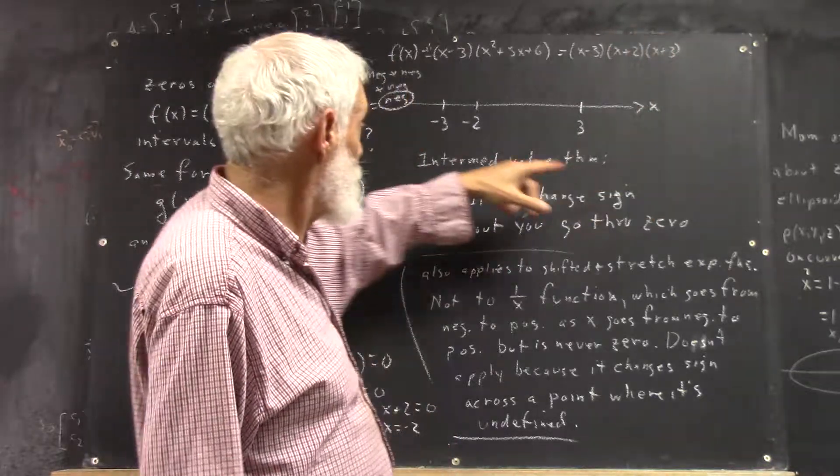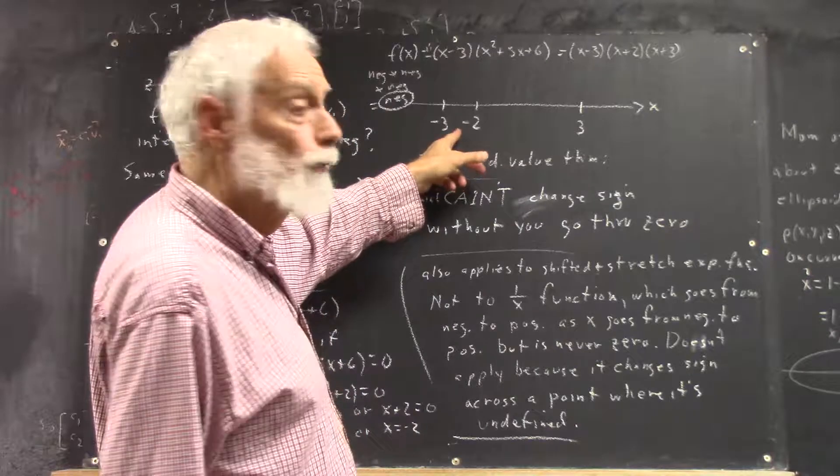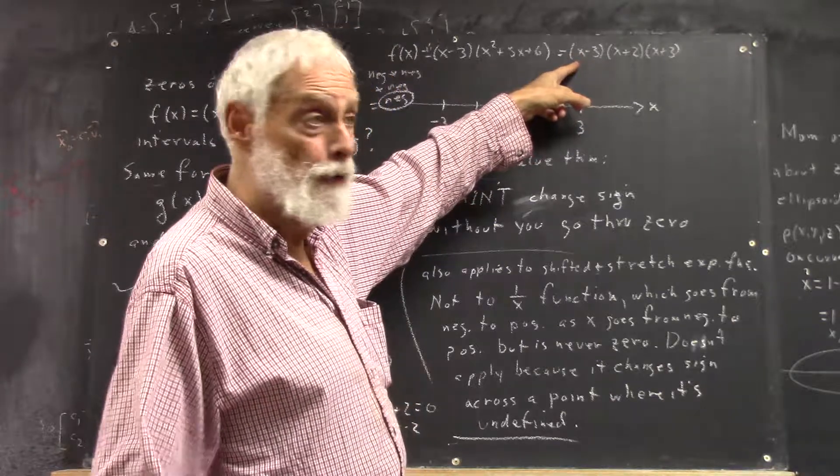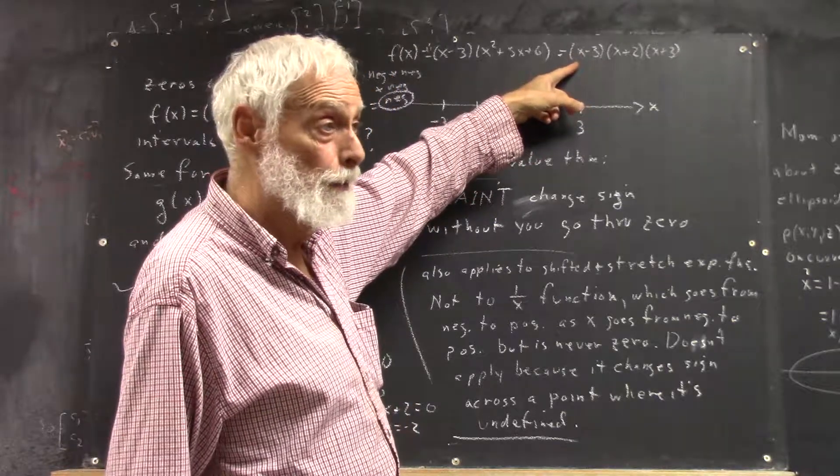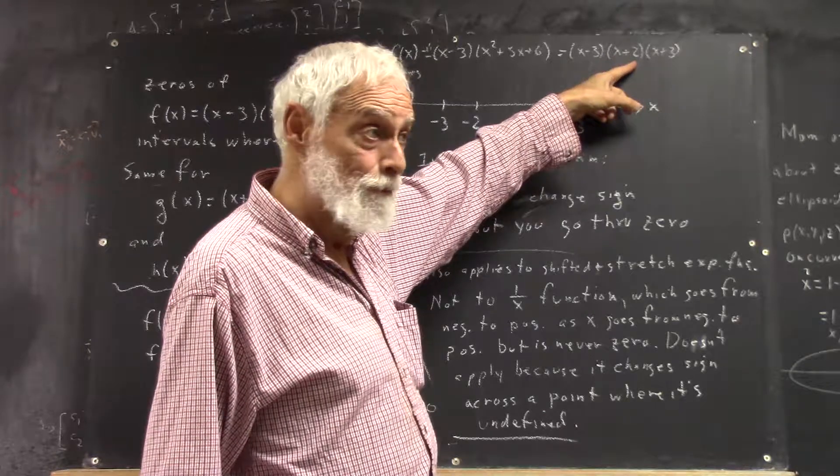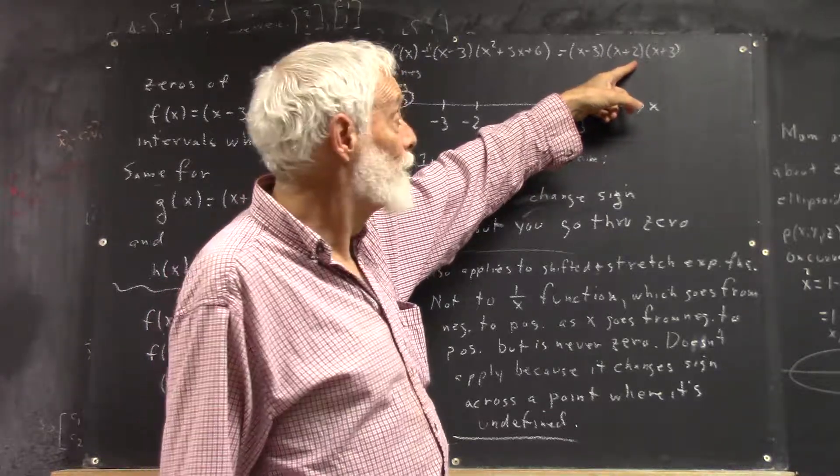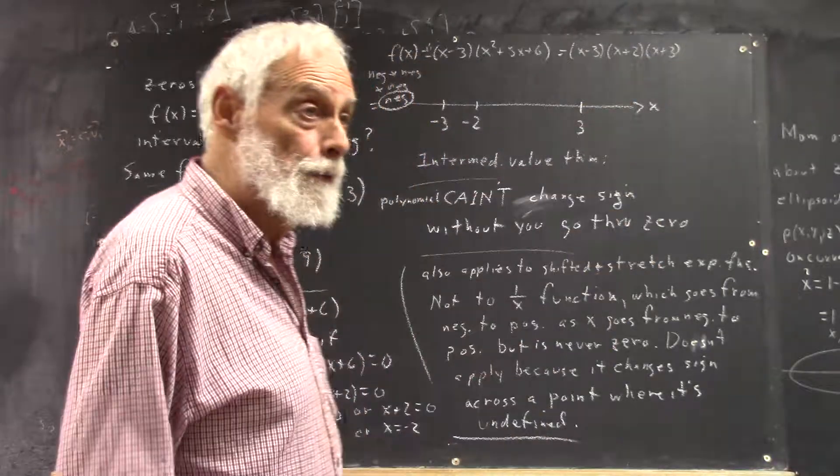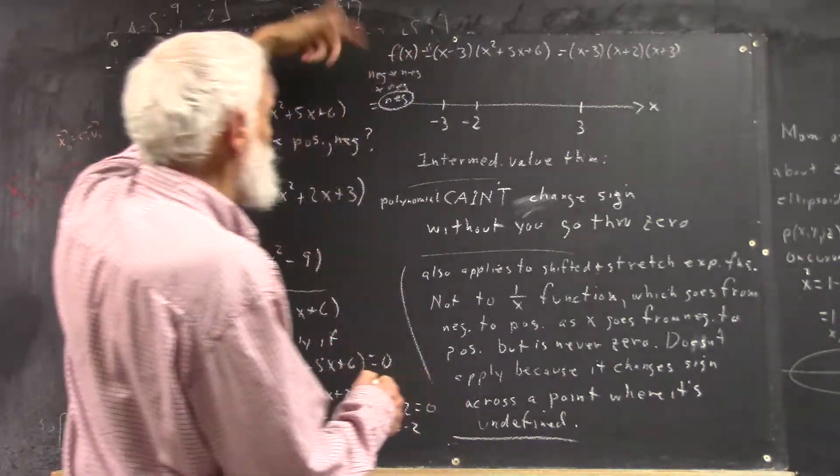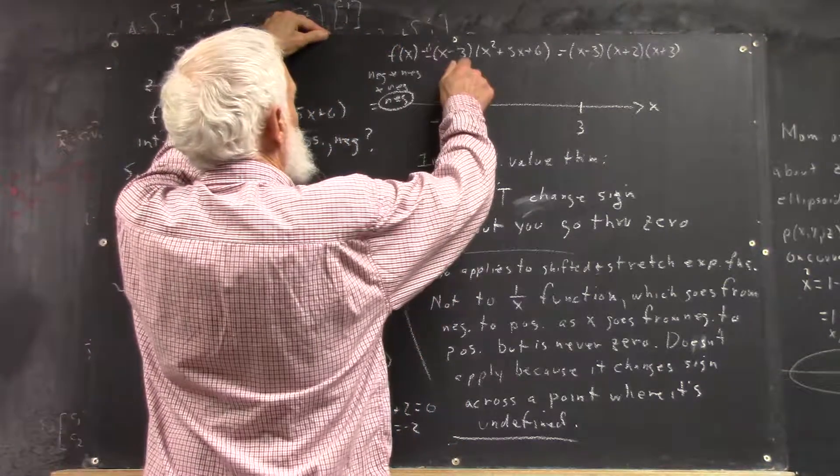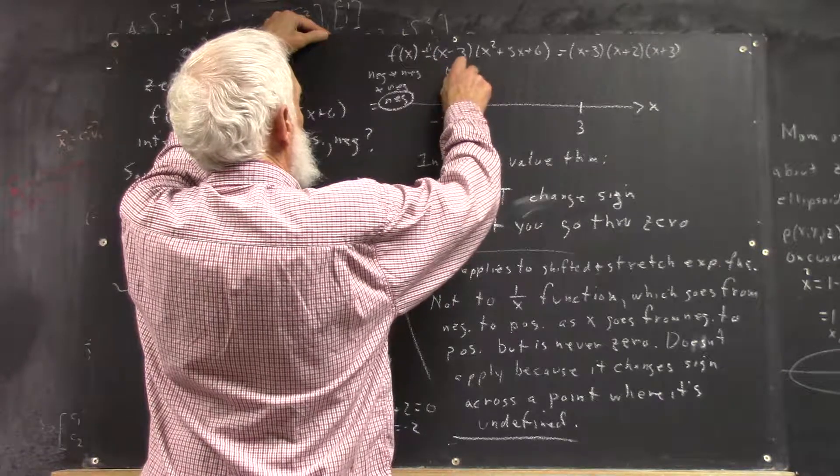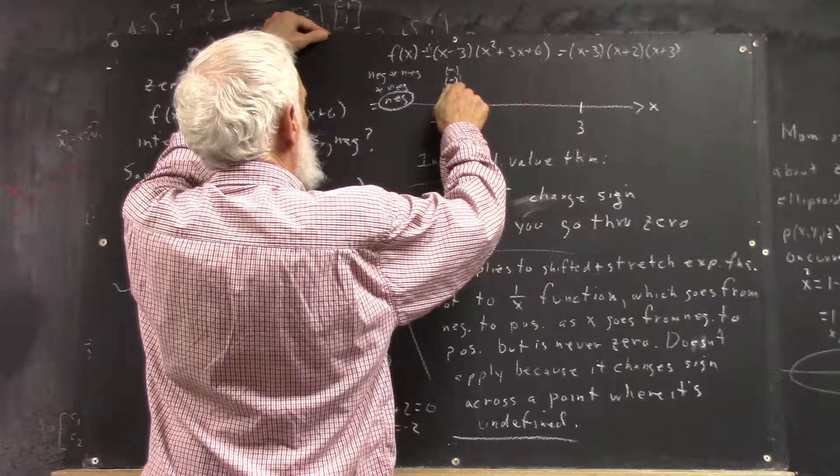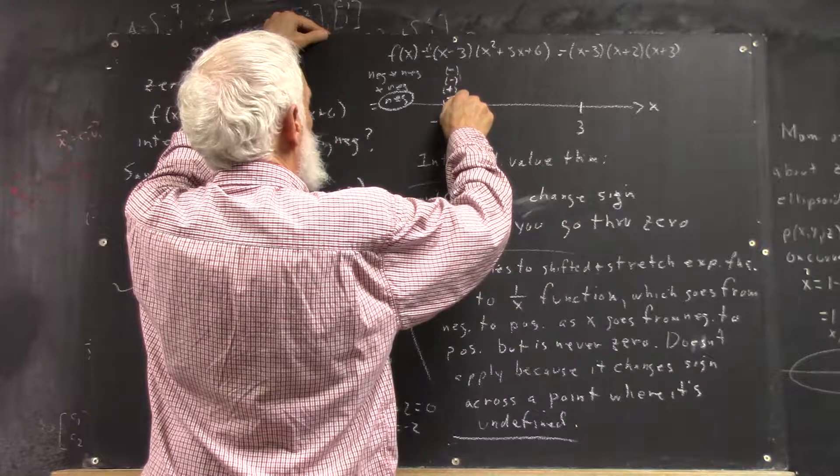And you could figure that out by just, let's say x is negative 2 and a half. Negative 2 and a half minus 3, positive or negative? Clearly negative. Negative 2 and a half plus 2, that's negative a half, that's negative. Negative 2 and a half plus 3, that's positive, that's a half. So negative times negative times positive equals positive.